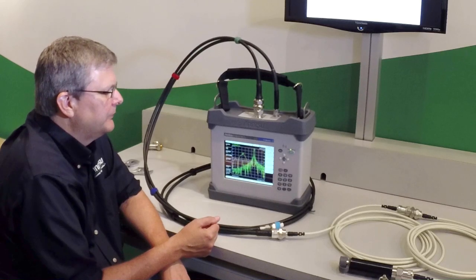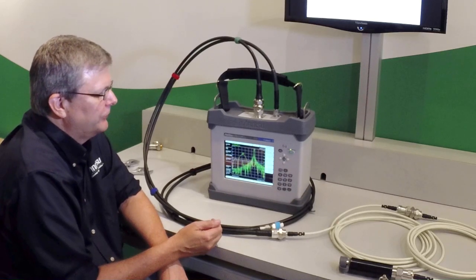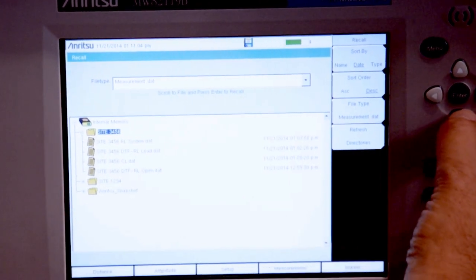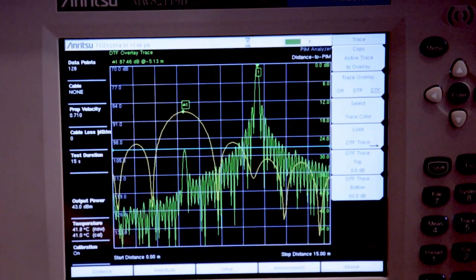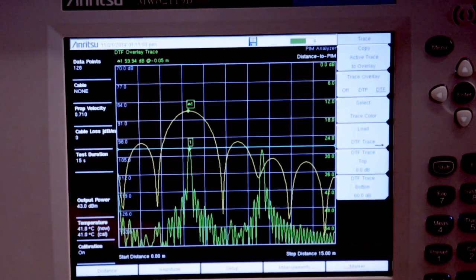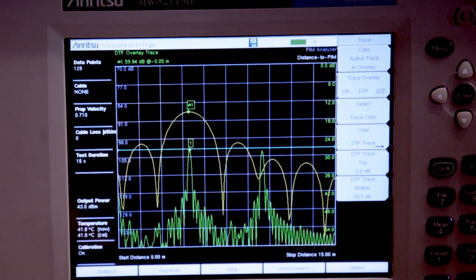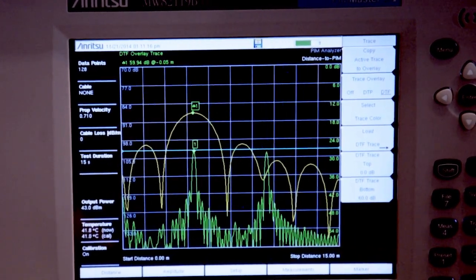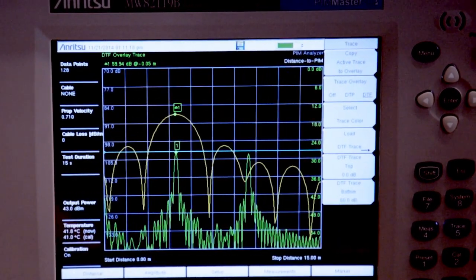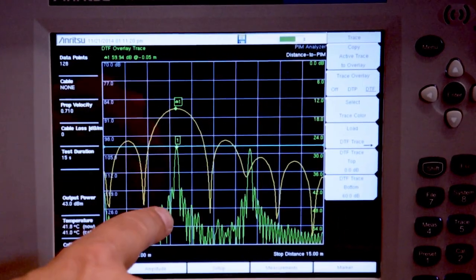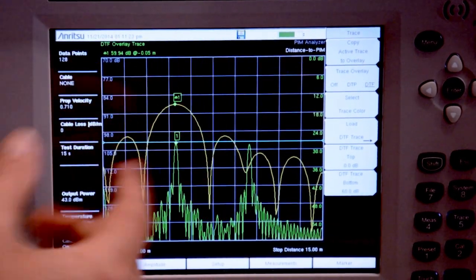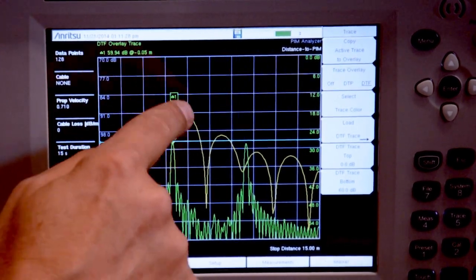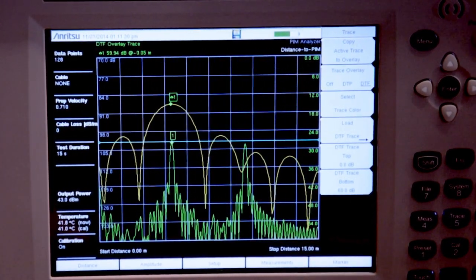In a closed antenna system or a system where we think the PIM source is internal to the system, a more useful trace to load is the distance to fault trace where we had the precision load at the end of the cable. So here we use once again the high resolution of the cable antenna analyzer mode and see a very clear picture showing us exactly where each connector is. We can see the input connector to the system, that connector at five meters, and the connector at the end. Without even caring what the numbers are at the top, we know that that connection at the middle is where our PIM problem is located.